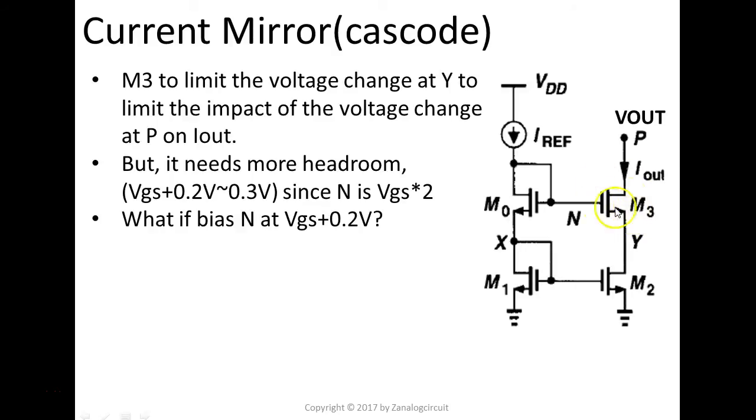The reason the cascoded Iout has very little dependency on Vout is because this M3 here is more like a source follower that keeps this node Y voltage very constant. You have this one as a shield. No matter how much change on the Vout, this voltage at Y doesn't change too much. That makes the current Iout very constant over a wide range of Vout.